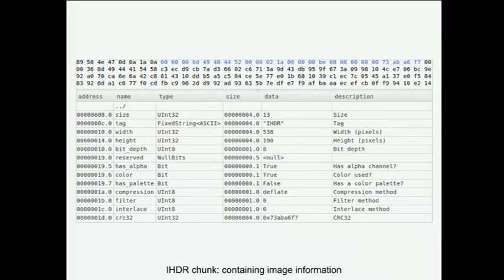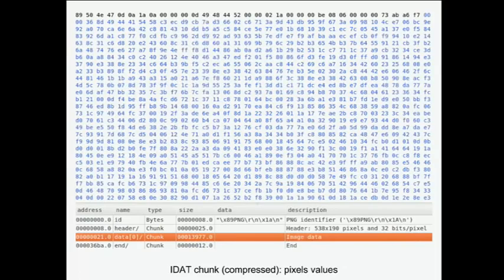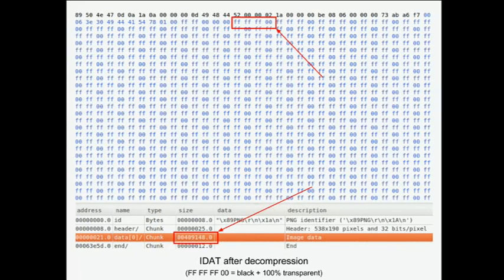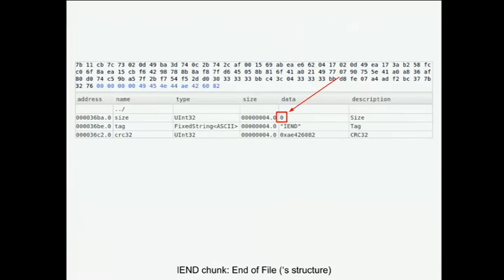At a high level, chunks have a common structure: the size of the chunk on four bytes, then the type. If the first letter of the type is lowercase, this chunk is ancillary. If it's uppercase, it's critical — meaning if this chunk is invalid or missing, the file is considered corrupted. Then comes the data of the chunk and a checksum. And remember: we can add custom chunks. In the Google example we have three chunks. Looking at the IDAT chunk: it contains the pixels in zlib format — for example FFFF0 means black pixels with transparency, which is the background of the picture.